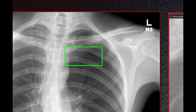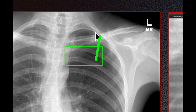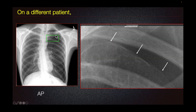We measure the pneumothorax from the maximum apical to intrapleural distance, staying consistent on every follow-up. Additional things that we evaluate in patients with pneumothorax is the status of the lung parenchyma, which may be totally collapsed, but not in this case.